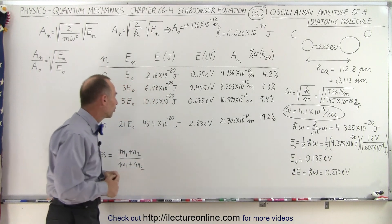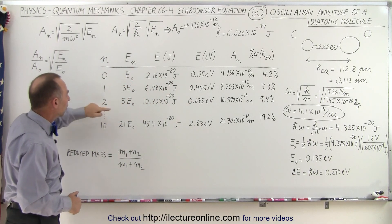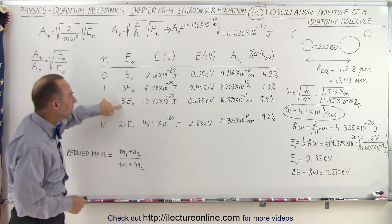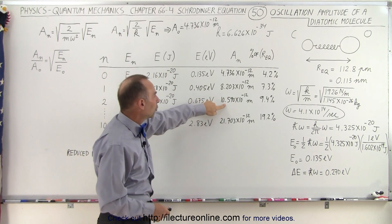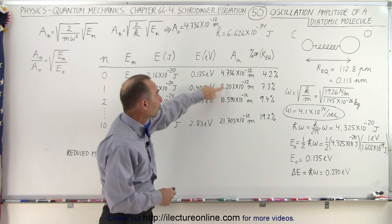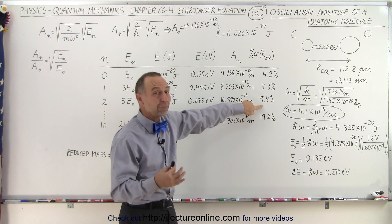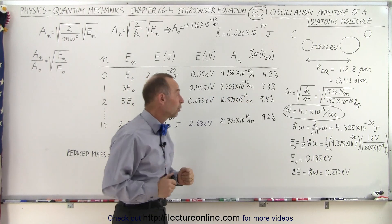We jump to the next level. We have now five times the energy, five times the energy that we started with. We now have an amplitude that's about two and a half times as much as we had before, so now we're at 9.4 percent of the total distance between the atoms.